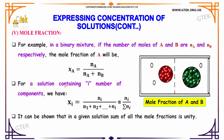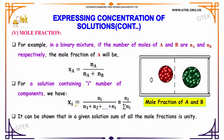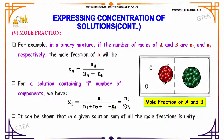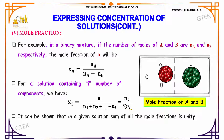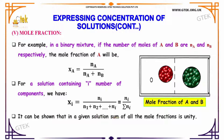For a solution containing i number of components, xi is equal to ni divided by the summation of ni. It can be shown that in a given solution, the sum of all the mole fractions is unity.